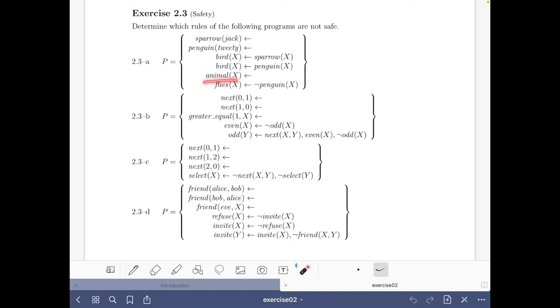Because there's a variable X that does not occur in any positive atom of the body, this rule is unsafe. What about the next one? The situation is similar.